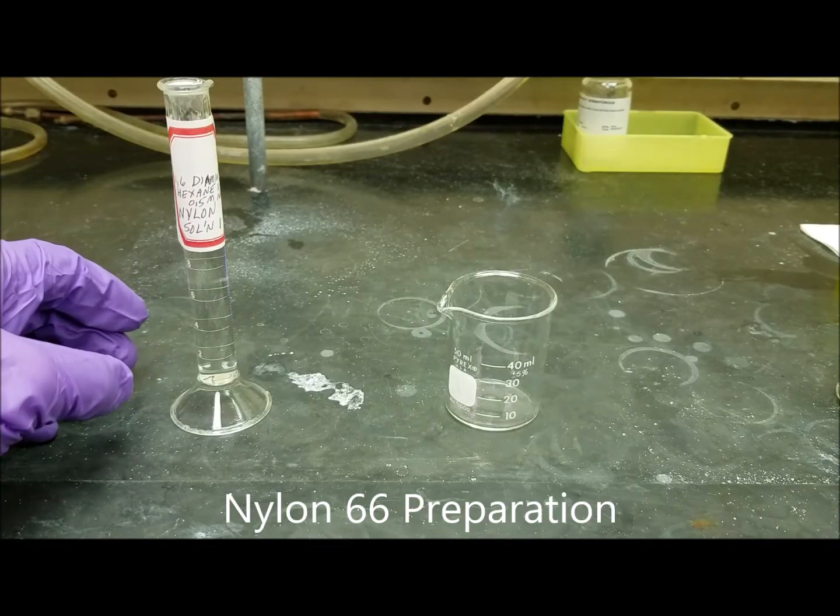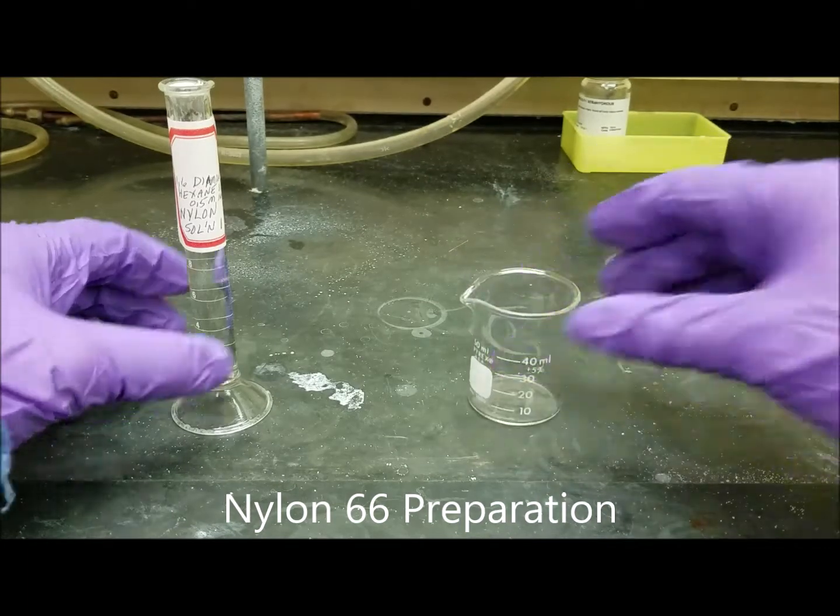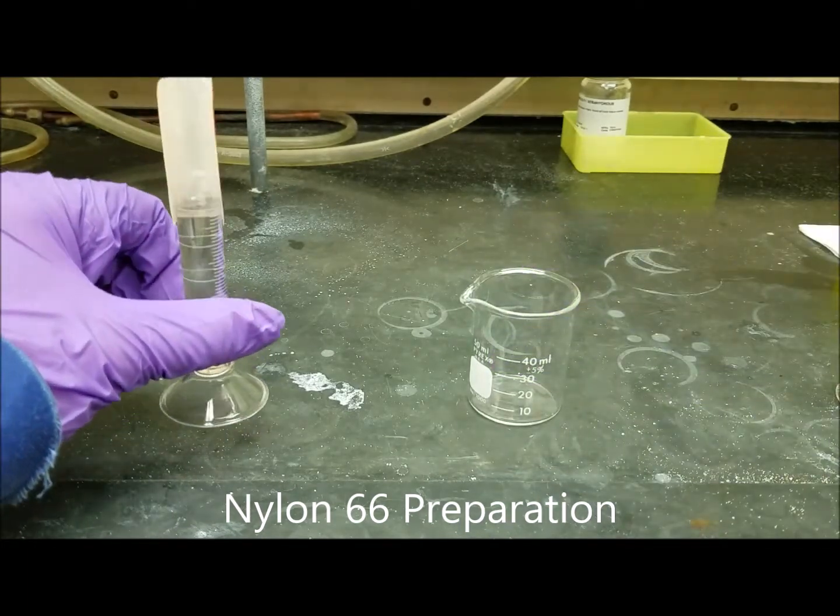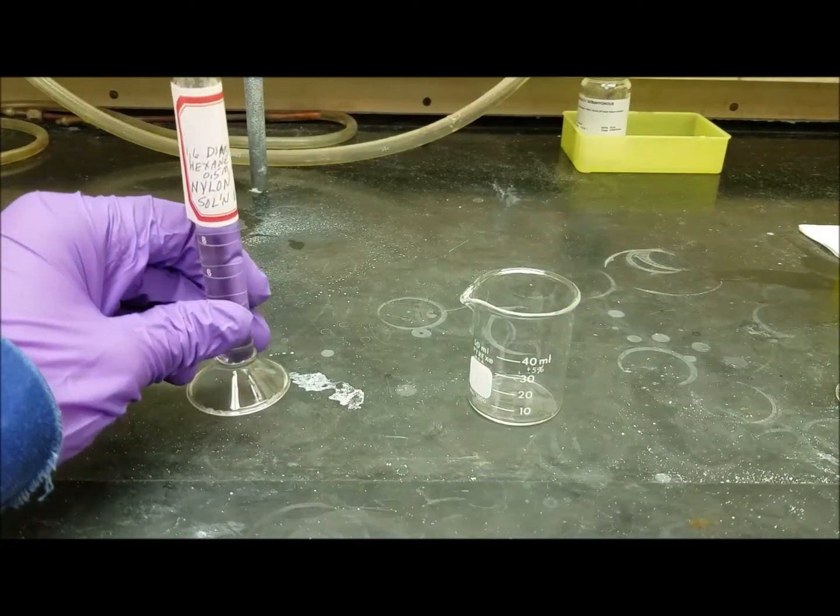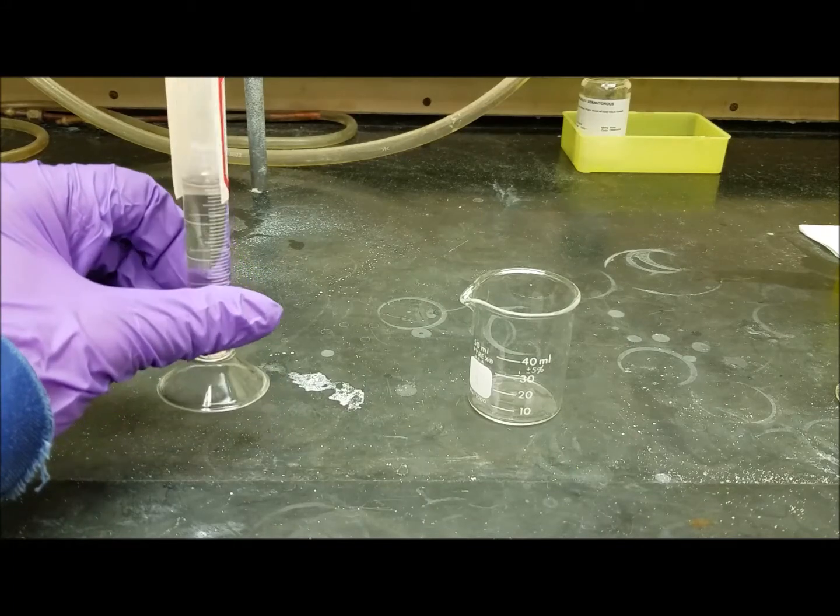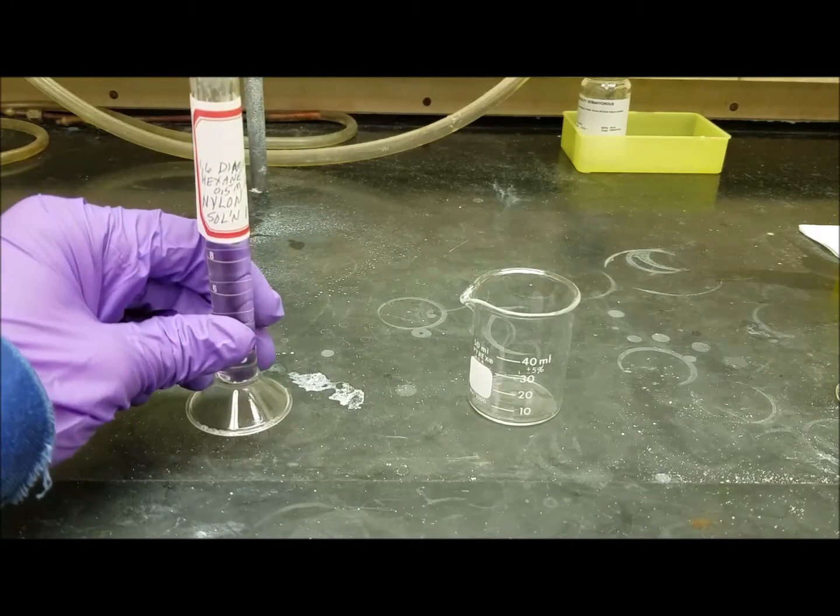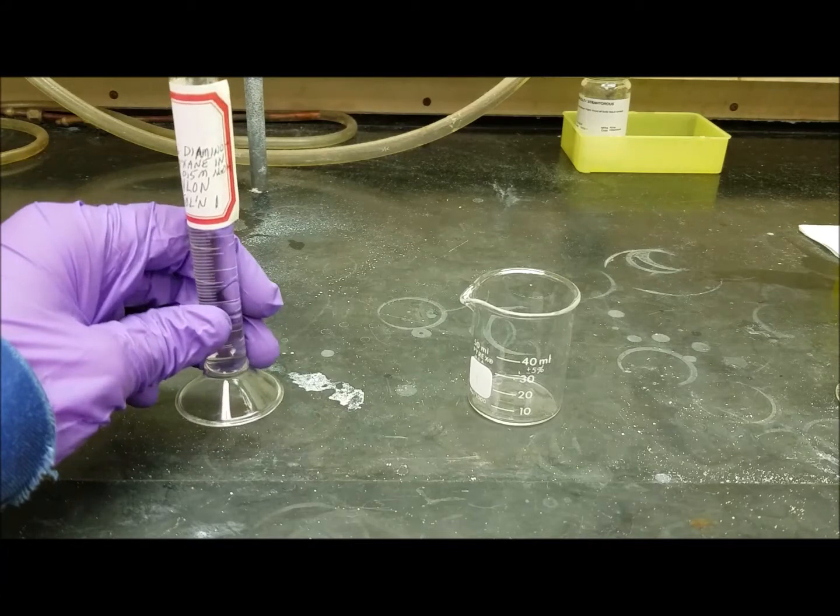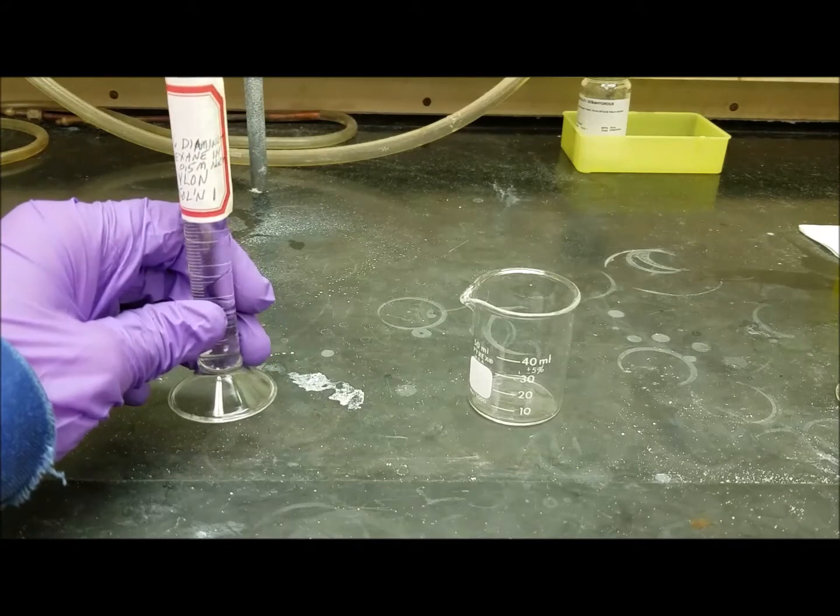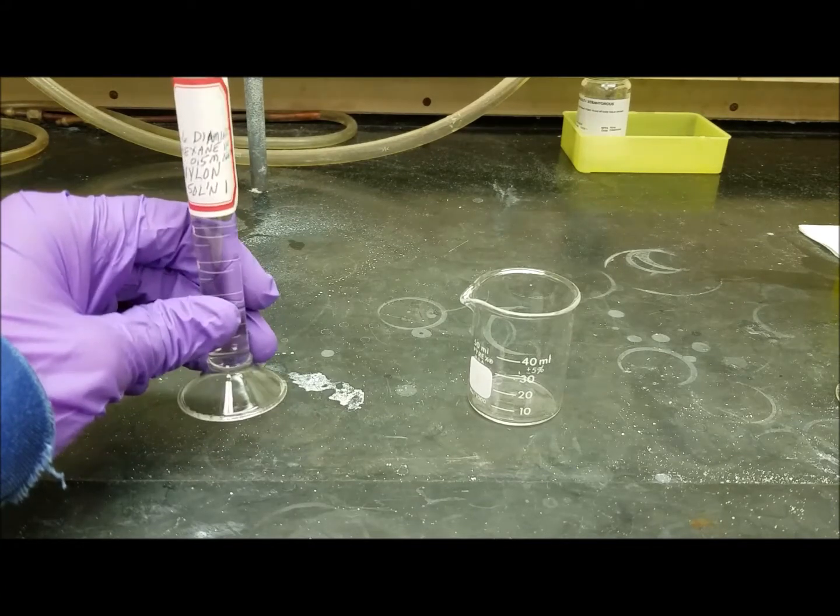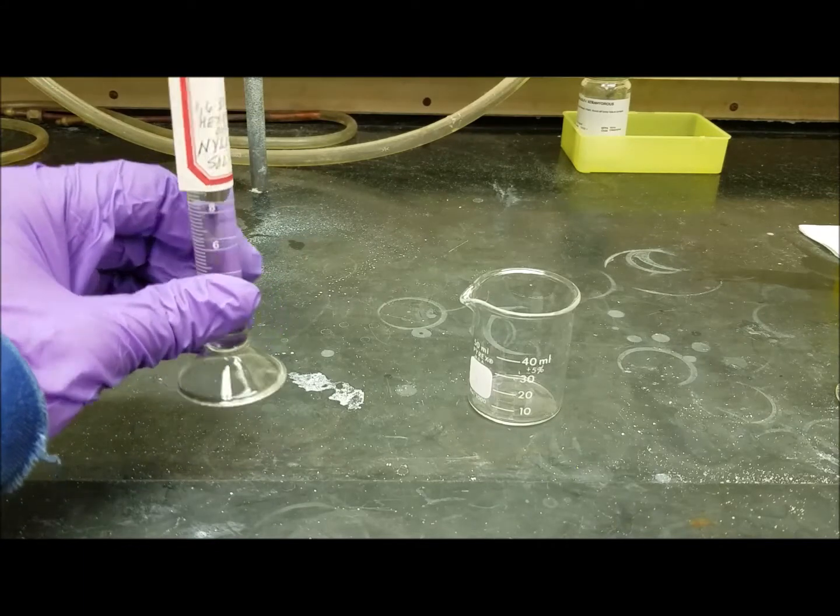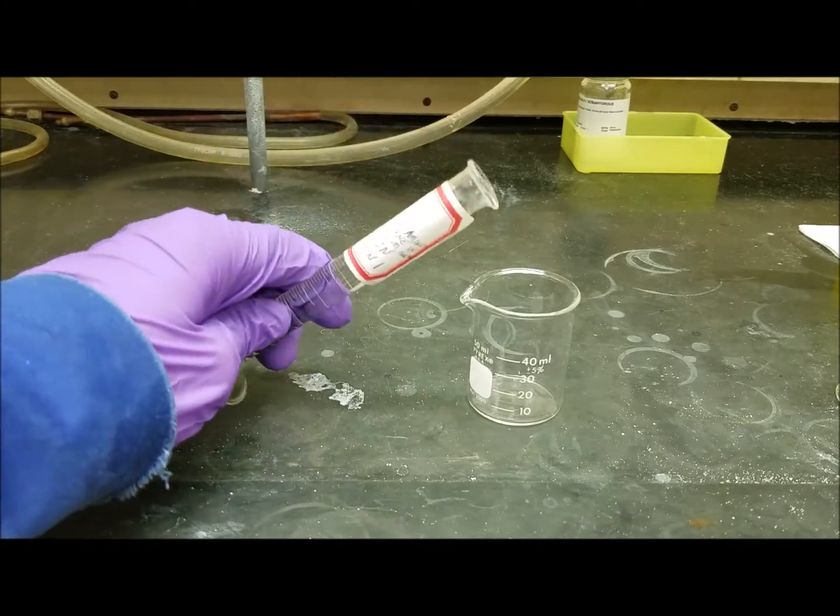Okay, so here I have a beaker, a 15-milliliter beaker, and a 10-milliliter graduated cylinder. And this is filled with 10 milliliters of 1,6-diaminohexane. And it also contains 0.5 molar sodium hydroxide. And the solvent here is water, so it's an aqueous solution.